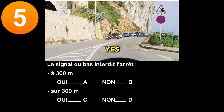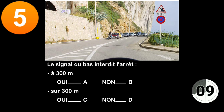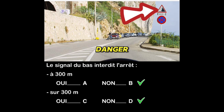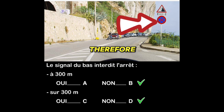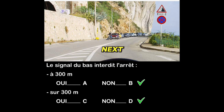Question five: does the lower signal prohibit stopping at 300 meters? Yes (A) or no (B)? In 300 meters? Yes (C) or no (D)? The sign that completes the danger signal specifies that the risk of falling stones will extend over a distance of 300 meters. But it is not associated with the bottom panel, which no sign completes. The stop is therefore prohibited from the signal until the next intersection, and not in 300 meters.